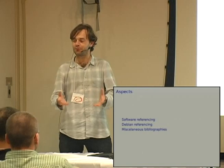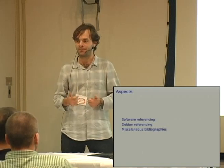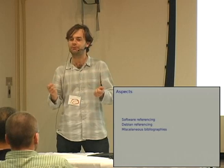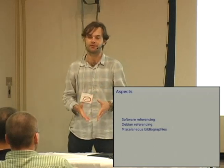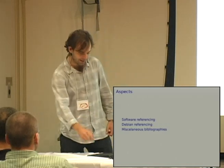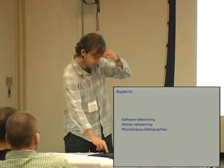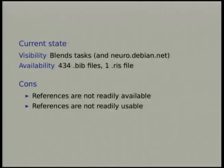Then, how do we reference Debian itself? We've been in existence for 17 years and we don't have means to reference it appropriately. There is a Debian.bib from Andreas with some BibTeX references for Debian entries, but there is nothing beyond that - and that's funny. And there are miscellaneous bibliographies.